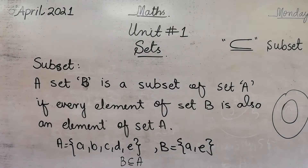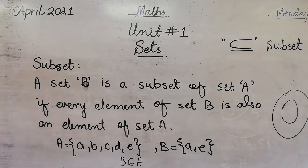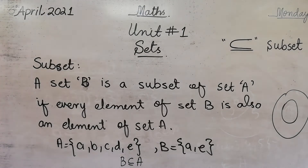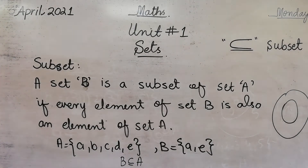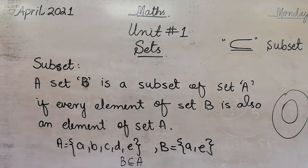Listen again: you have one set, from that set you pick one or some elements and make another set — that set is known as a subset. And you know that subset is denoted by this symbol.